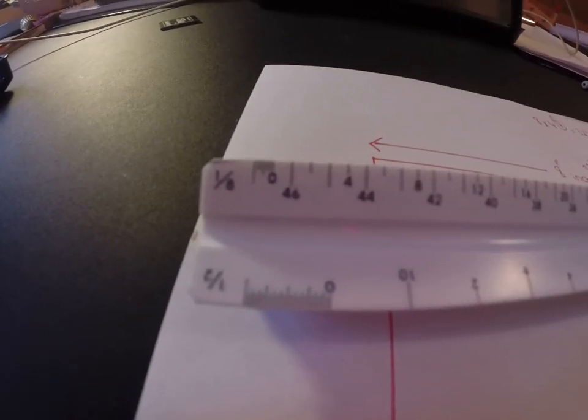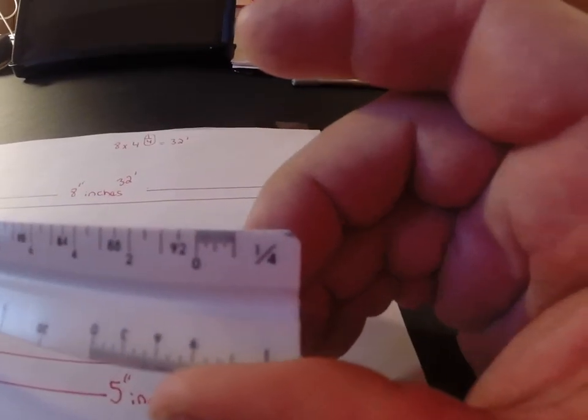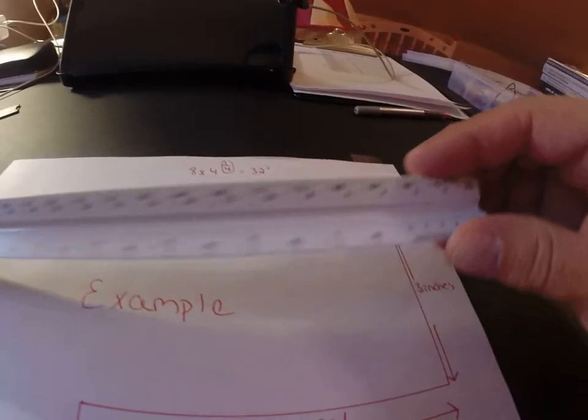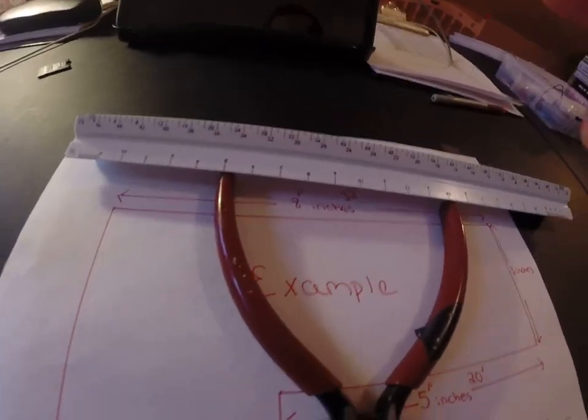Here we are. So on this left side you'll see that eighth inch equals a foot, and if you read it from the right side, a quarter inch equals a foot. And let me get this so you can see this a little bit from a different angle.